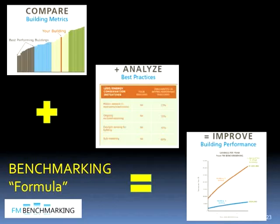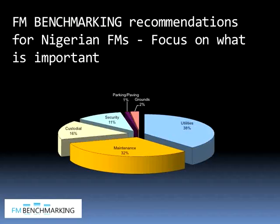Looking at the entire scope of benchmarking options may look formidable, but my recommendation for Nigerian FMs is to focus on what's important. There are four key areas: maintenance, utilities, security, and janitorial. These cover between 95 and 97 percent of your operating costs. Other things like paving, parking, and grounds represent such a small amount of operating costs that if you're starting the benchmarking process, you're better off focusing on these four big items.